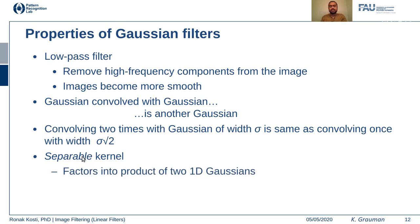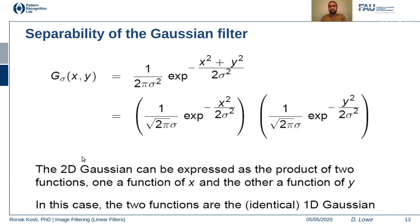Another interesting property of Gaussian filters is that they are separable kernels. If we have a 2D Gaussian filter, we can separate it into two different one-dimensional Gaussian kernels. Any 2D Gaussian can be expressed as a product of two Gaussian functions — this follows from the additive property of exponentials. What is interesting is that we can view each one-dimensional Gaussian kernel independently.